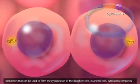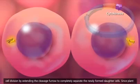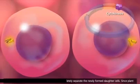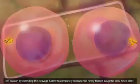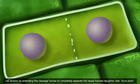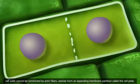In animal cells, cytokinesis completes cell division by extending the cleavage furrow to completely separate the newly formed daughter cells. Since plant cell walls cannot be constricted by actin fibers, vesicles form an expanding membrane partition called the cell plate.